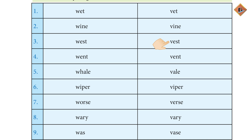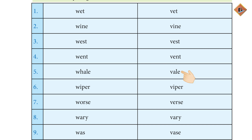Went W-E-N-T means to go, and Vent V-E-N-T means to let air out. Whale W-H-A-L-E and Wale W-E-L-E — these are the next word pair.